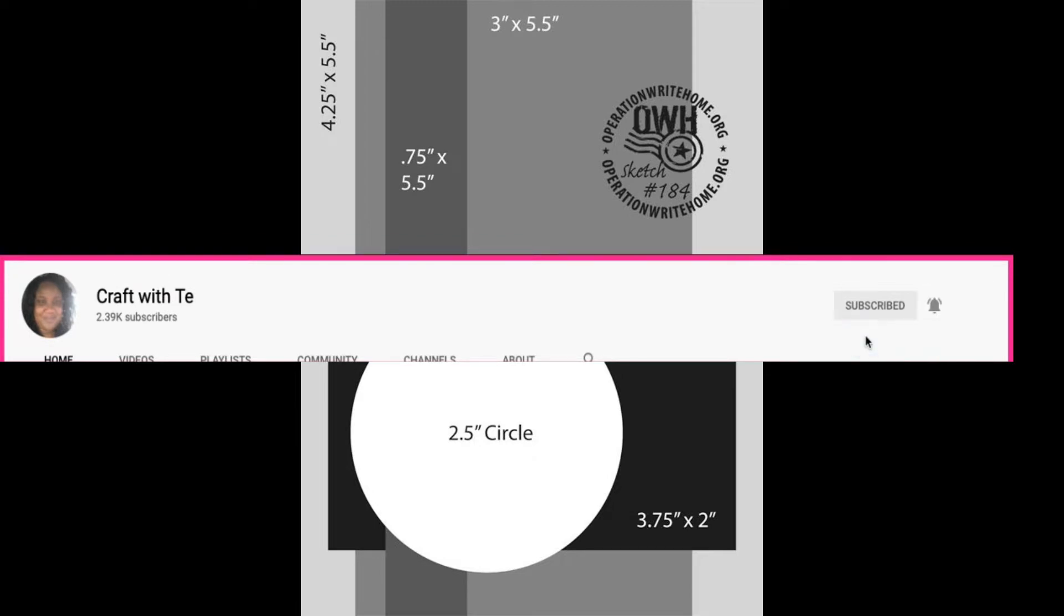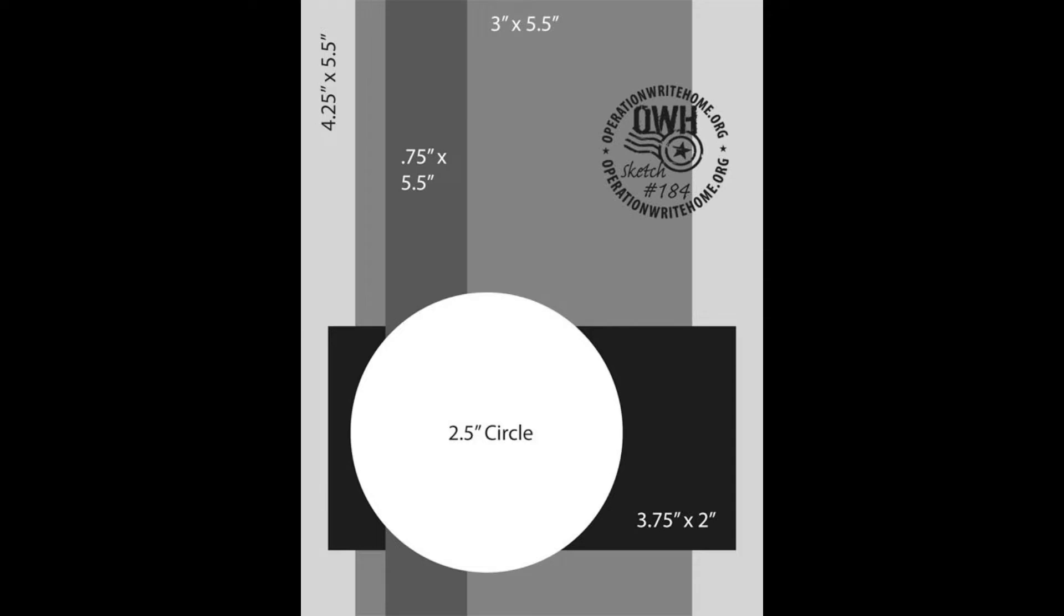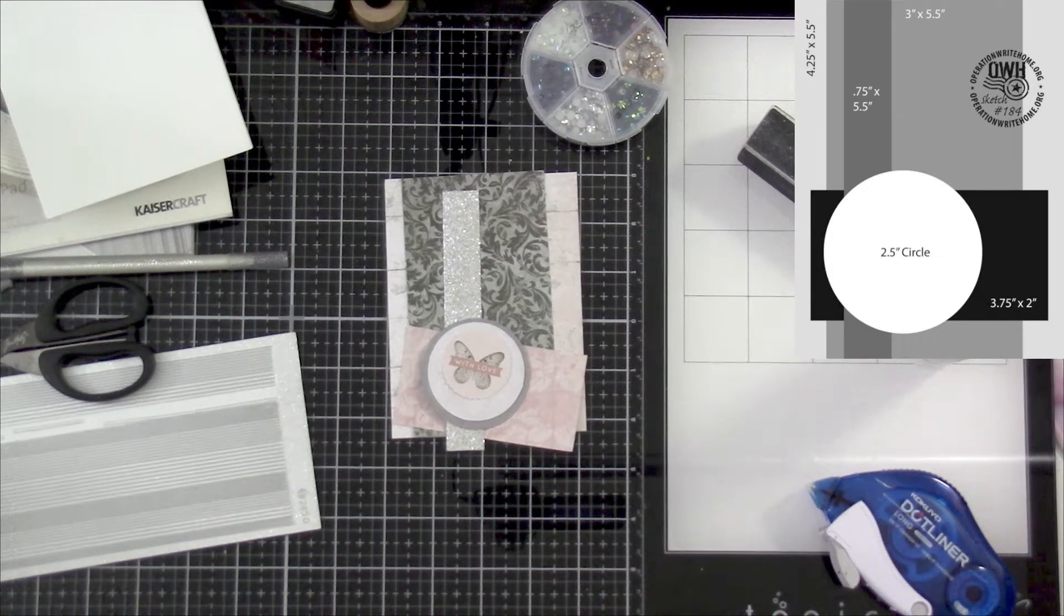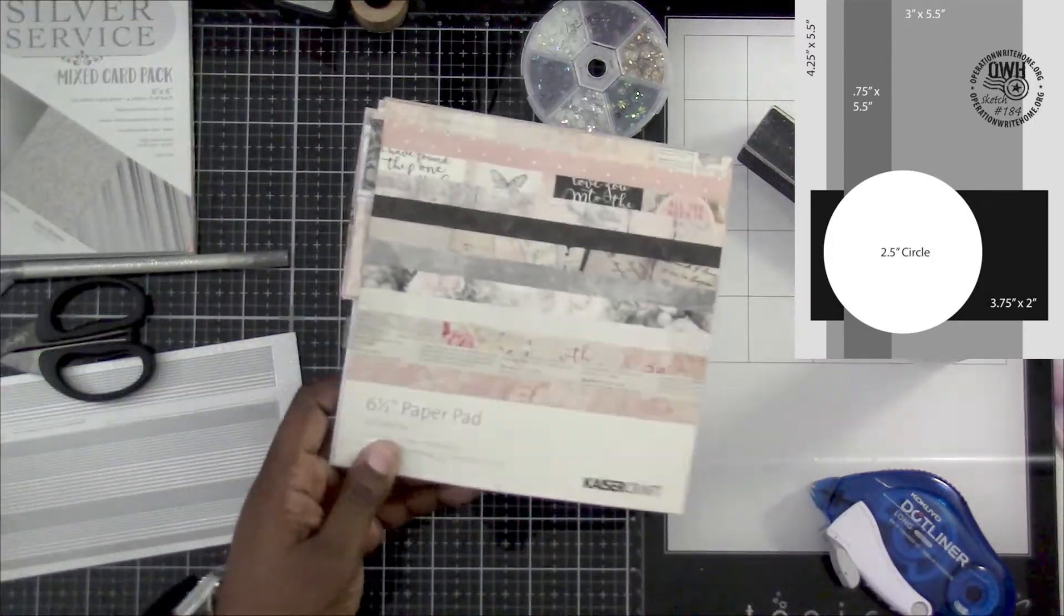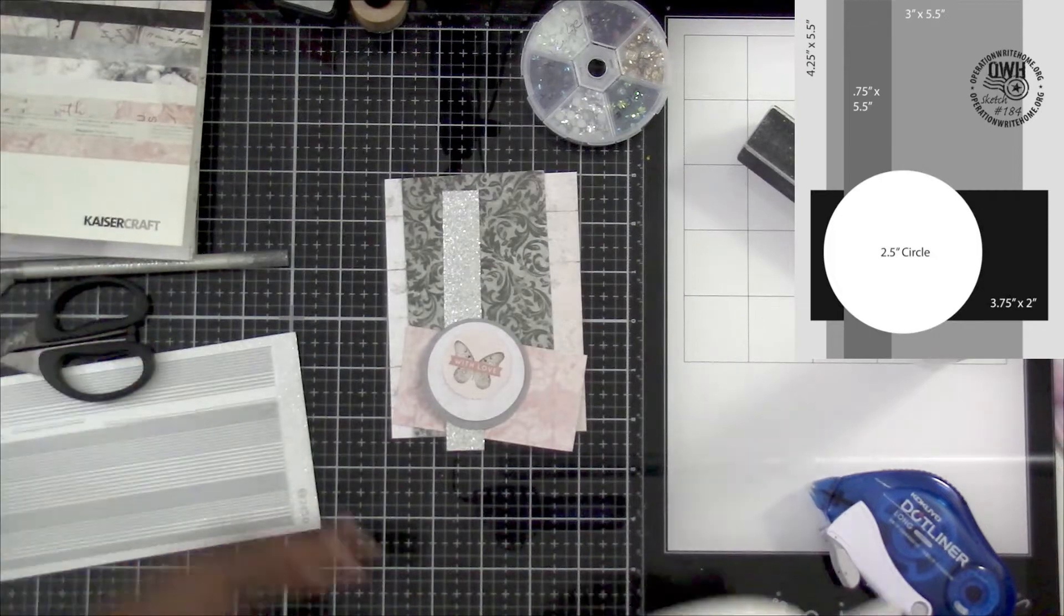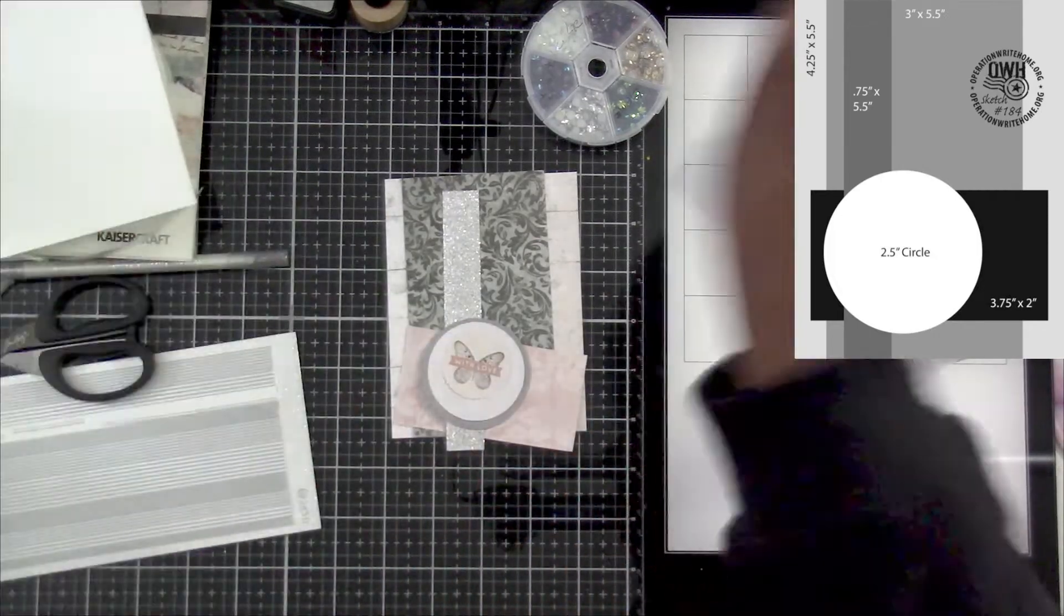And let me tell you, I love Operation Write Home sketches. I find most of them on Pinterest and I have a board saved with card sketches, so you guys can always click on my links to go there. So as you can see, I still am working with the Kaiser craft collection. I have everything pretty much already cut out.